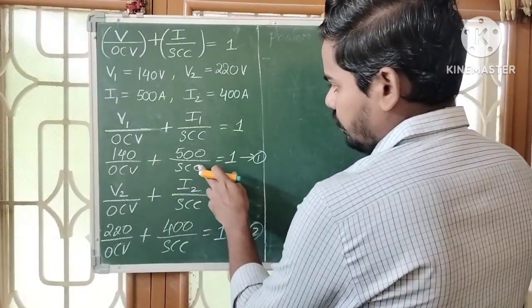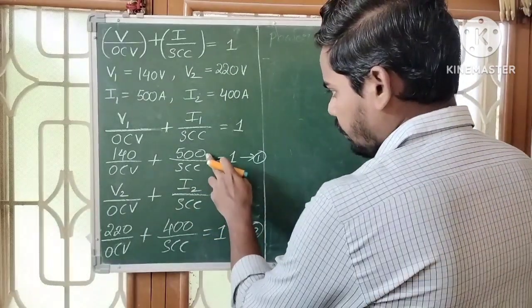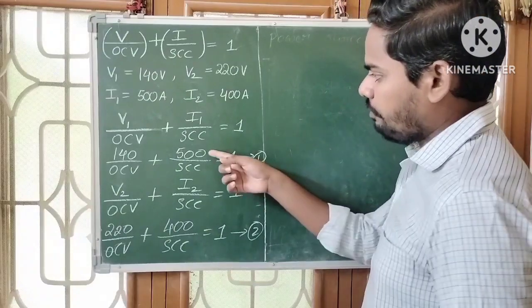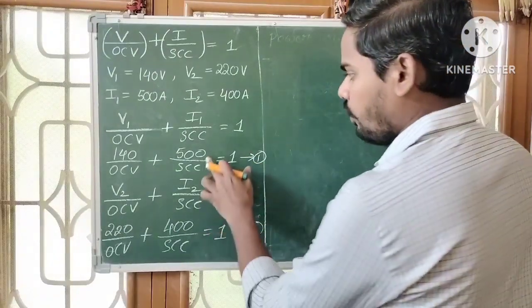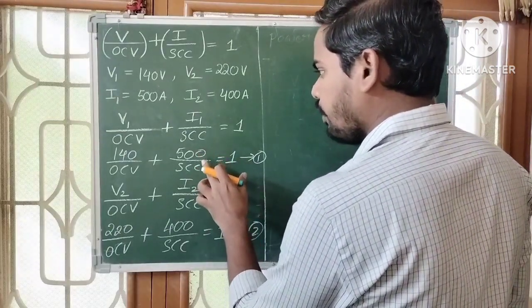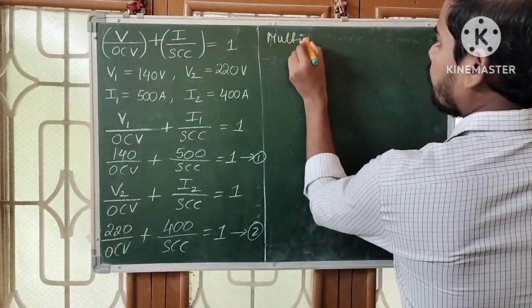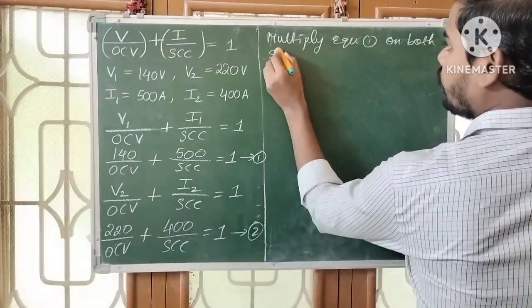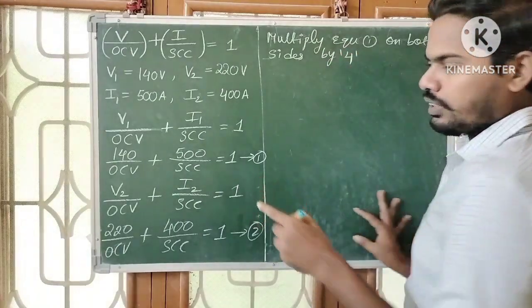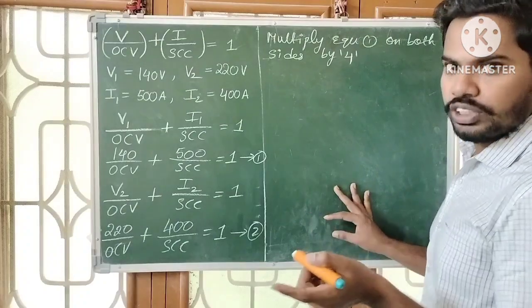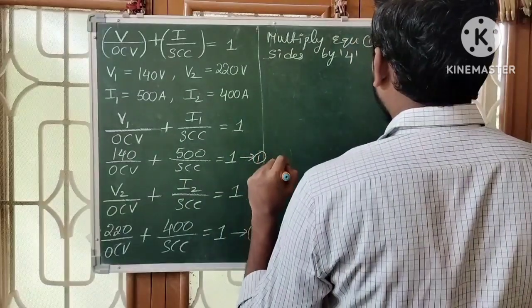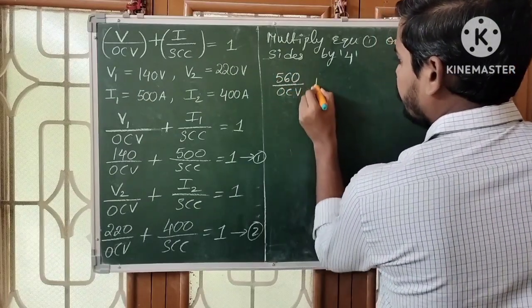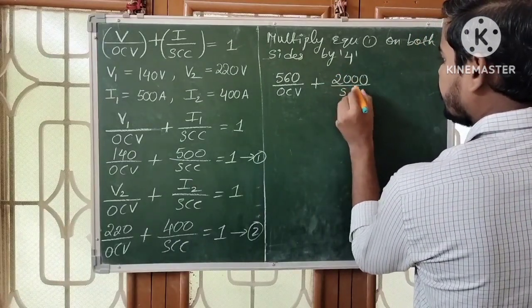Observe the second terms of both equations: 500 and 400. The LCM of 400 and 500 is 2000. Multiply equation 1 on both sides by 4: (4×140)/OCV + 2000/SCC = 4, giving 560/OCV + 2000/SCC = 4 — equation 3.